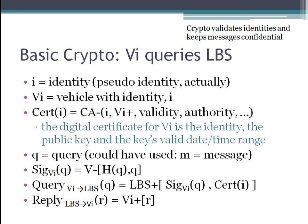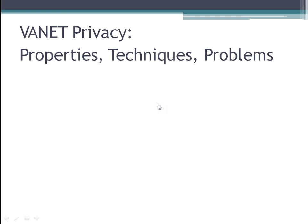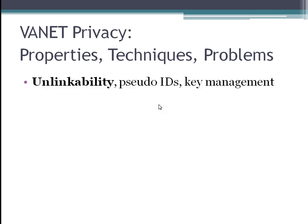The basic cryptography for VANETs follows the same pattern as any other PKI-type model — I made a whole separate video on this, so please check YouTube for more detail on the crypto. As far as privacy is concerned, there are several properties of privacy that are discussed in the literature, and there are some techniques and problems associated with these.